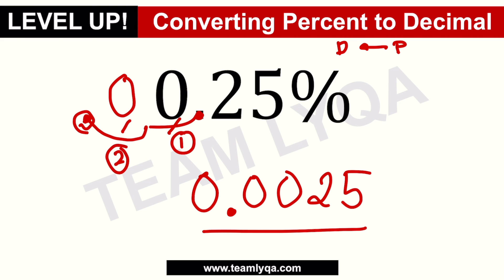The answer is zero point zero zero two five. Be careful not to miss a zero or misplace the decimal, because that will give you the wrong answer.